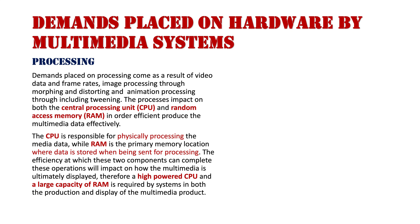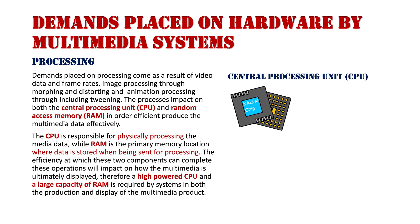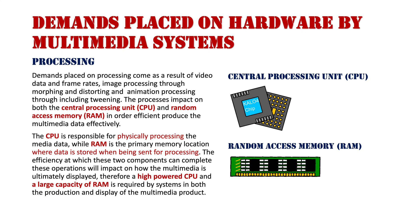The next area is processing. We're talking about the CPU — the central processing unit — which does all the processing, with RAM being the memory location where data is stored through the fetch-execute cycle for the CPU to process. Demands placed on processing come as a result of data frame rates, image processing through morphing and distorting, and animation processing which includes tweening. The impact on both CPU and RAM is significant in order to efficiently produce multimedia data. The CPU has to process all the calculations related to frame rates and image processing.